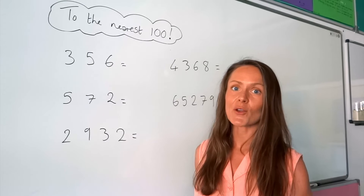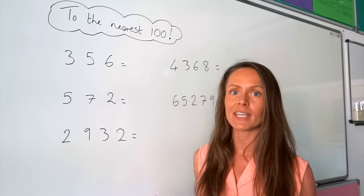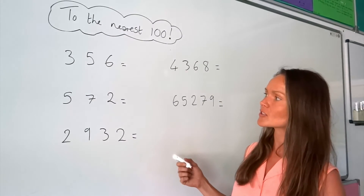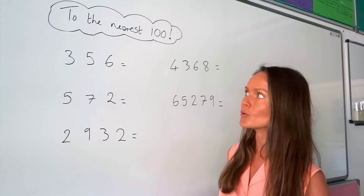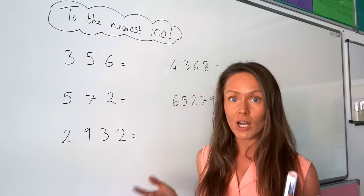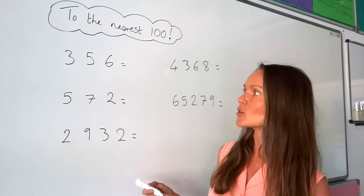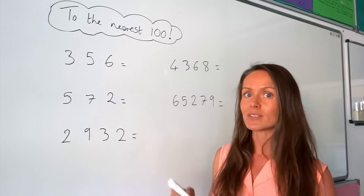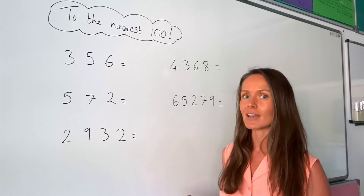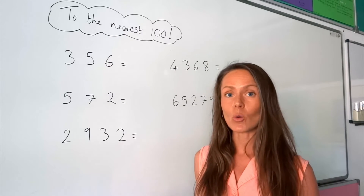In this video I'm going to show you how to round to the nearest 100. Before I get started on these examples, I just want you to think of the 100 times table, because when we're rounding these numbers up or down, what we're doing is rounding to a number that's in the 100 times table that's closest to that number.